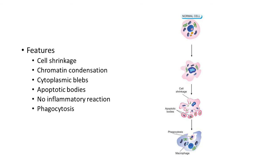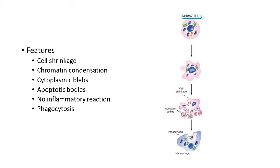Coming to the morphologic features of apoptosis: apoptosis may involve a single cell or a small cluster of cells. The cell is shrunken to a mass of intensely eosinophilic cytoplasm with shrunken organelles — kind of a mummified cell. There is also condensation of chromatin leading to pyknosis, and there can be cytoplasmic blebs — small projections from the surface.